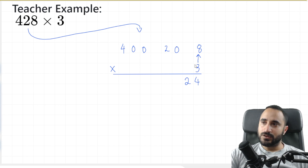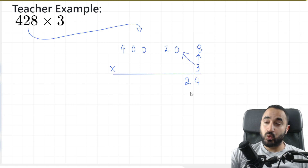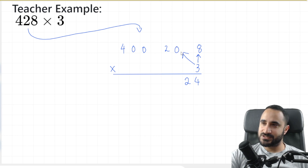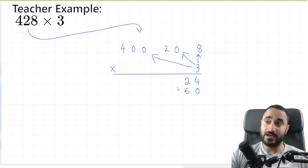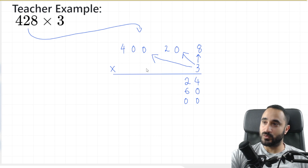3 times 8 is 24. 3 times 20 — that's the same as 3 times 2 with a 0 at the end, so I'm going to write the 0 first, and then do 3 times 2, which is 6. And now 3 times 400 — that's the same as 3 times 4 with two 0s at the end, so I'm going to write the two 0s first, and then do 3 times 4, which is 12.